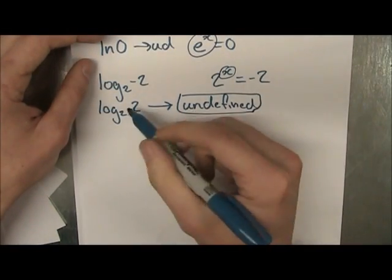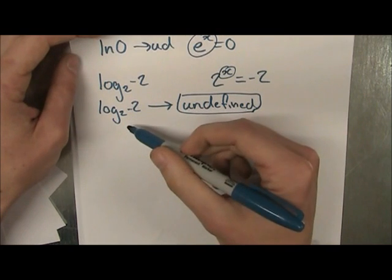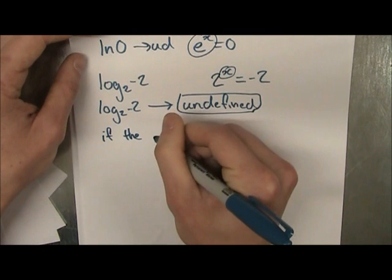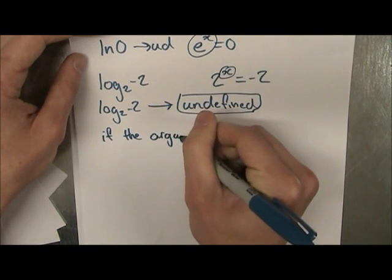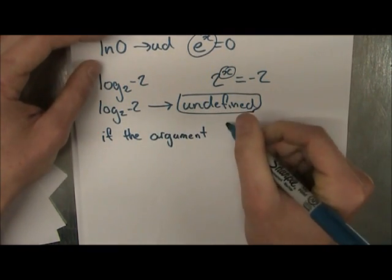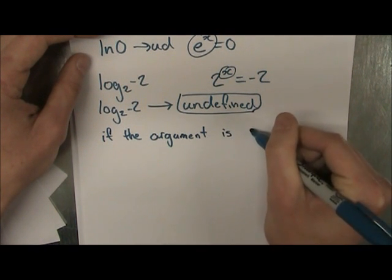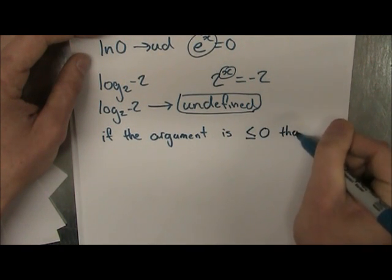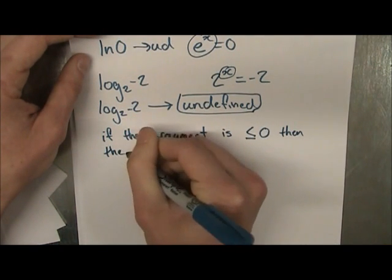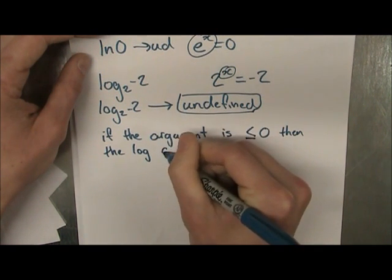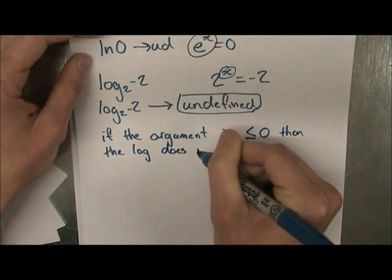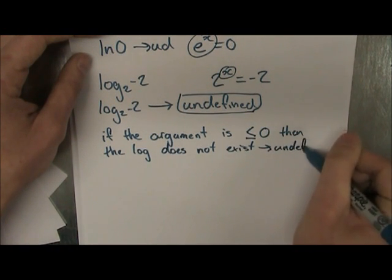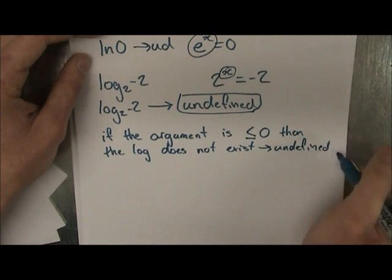That goes for any number, any negative number, and any base. It doesn't matter what the base is. Because if the argument is less than or equal to 0, then the logarithm, or it's undefined.